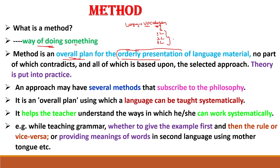From known to unknown, or simple to complex — this order is called a method. No part of it contradicts, and all of it is based upon the selected approach. Putting theory into practice is what method is about.